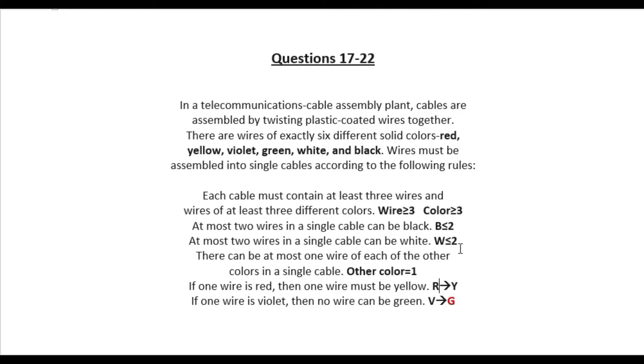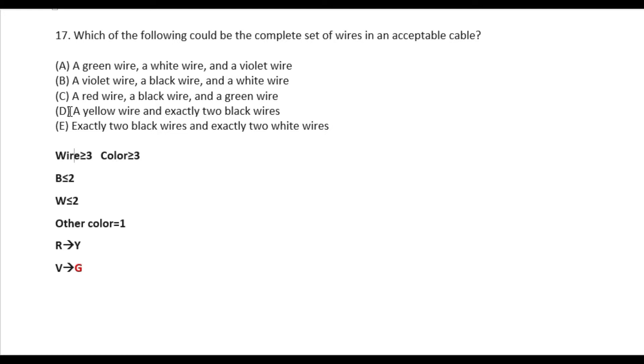Which of the following could be the complete set of wires in an acceptable cable? So in option E, we have 4 wires, option D 3, C 3, B or A or 3 wires. So if we want to ignore a condition, we are going to take a while, which means that we have 3 colors. This color is green, white, violet. B 3 colors, C 3 colors, but D is seen as the color. The color is yellow and black.